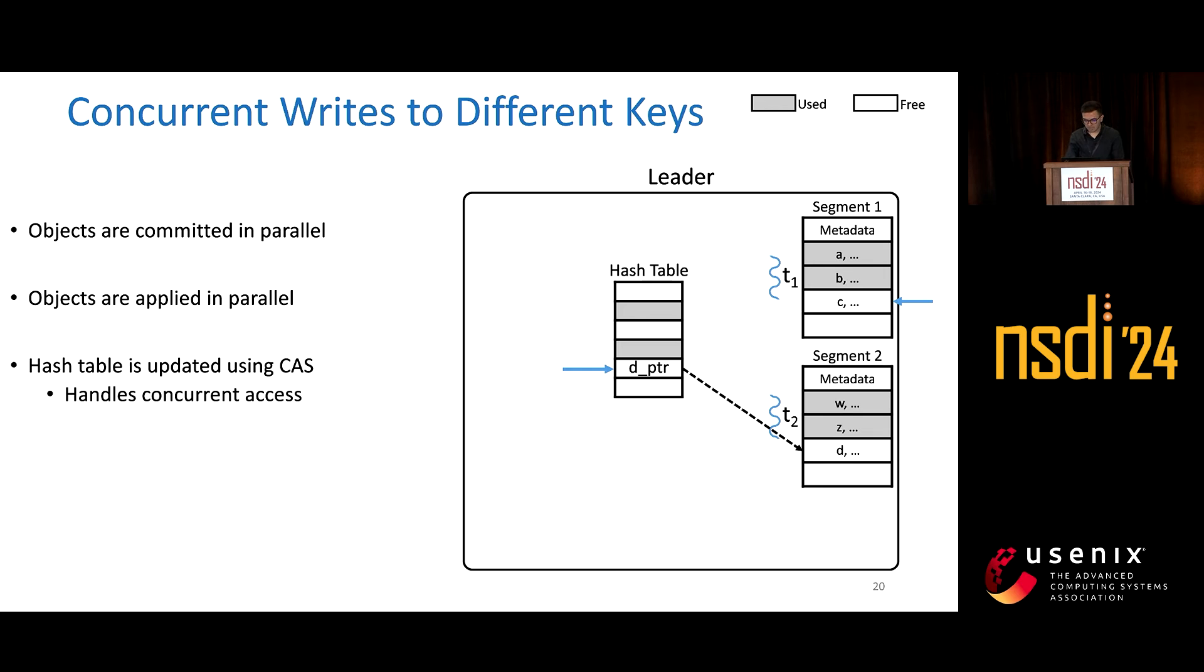Whenever the CAS to the hash table fails, we need to repeat the linear probing process from the initial position to ensure correctness. So eventually, the first thread will also find the next empty spot and insert its pointer there. So this is how concurrent writes to different keys are handled.